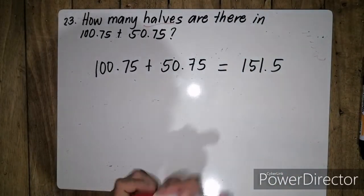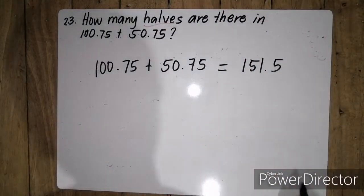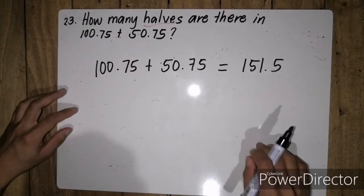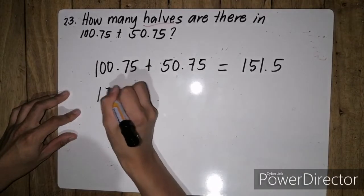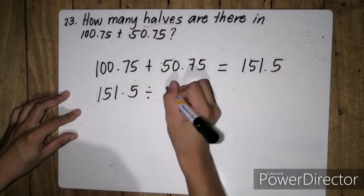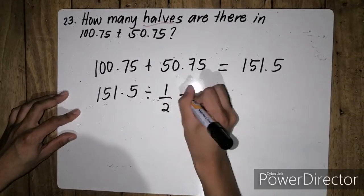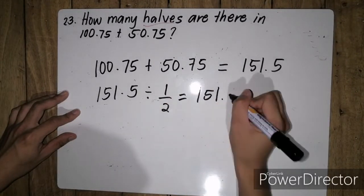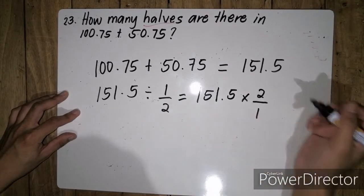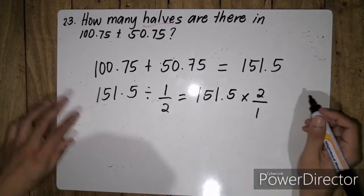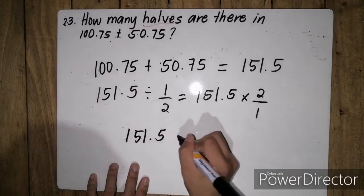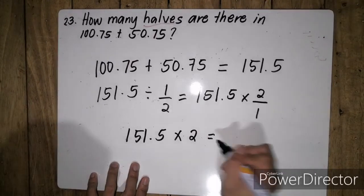all we have to do is divide 151.5 by one half. So we have 151.5 divided by one half, which is equal to 151.5 times 2 over 1, or simply 2. So 151.5 times 2 is equal to 303.